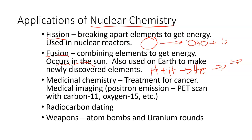Fusion is also used on Earth when we make new elements — the transuranium elements, so the elements after uranium, the ones with parentheses around them on the periodic table, the synthetically made elements, are made using fusion.